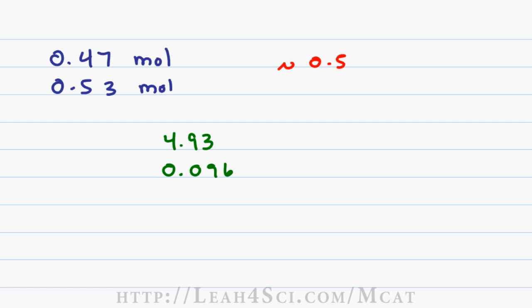Once again going back to our choices, 4.93 was rounded up to give us 5. 0.096 was rounded up to give us 0.1. That means our answer of 0.5 is slightly rounded up from the correct answer.